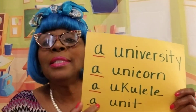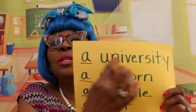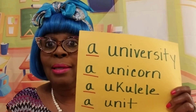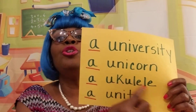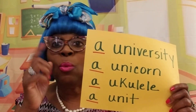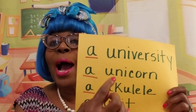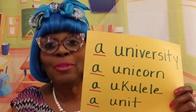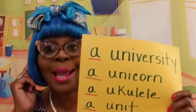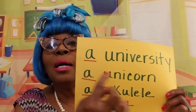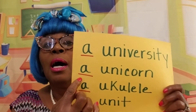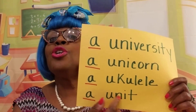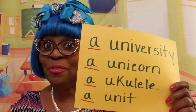University makes the consonant sound — Y. University, Y. Unicorn, Y. Ukulele, Y. Unit. You hear that Y sound, right? The Y is a consonant. It doesn't make the vowel sound. So, since you hear the consonant sound, you must say a university, a unicorn, a ukulele, a unit. They make the consonant sound of Y.